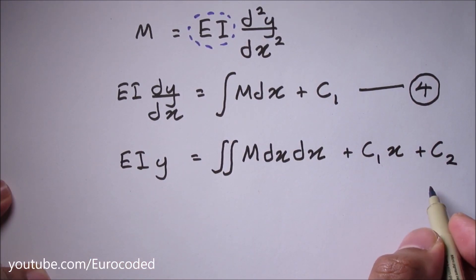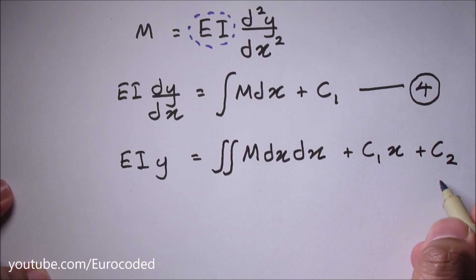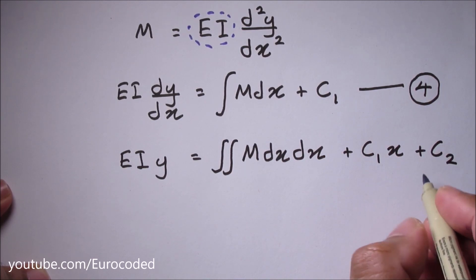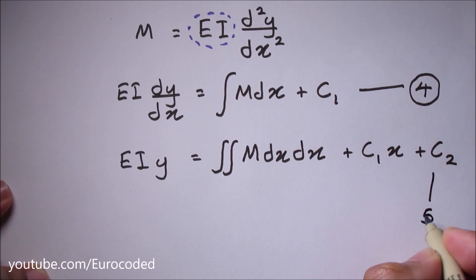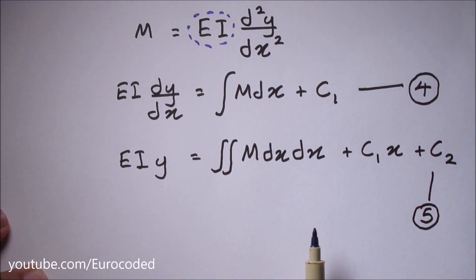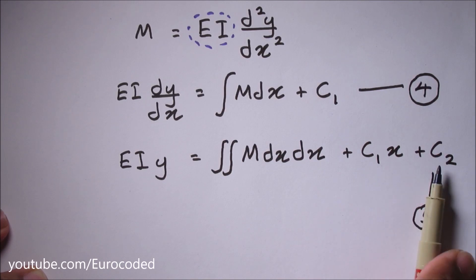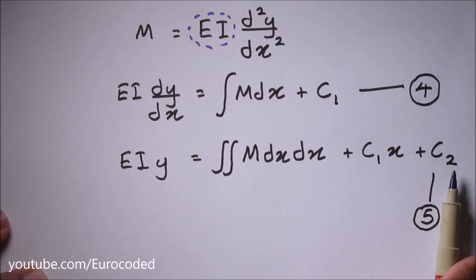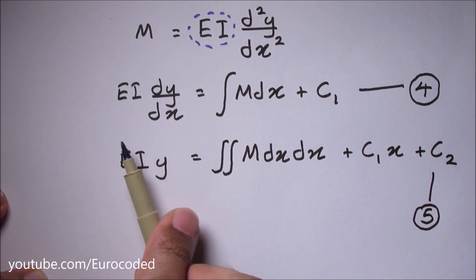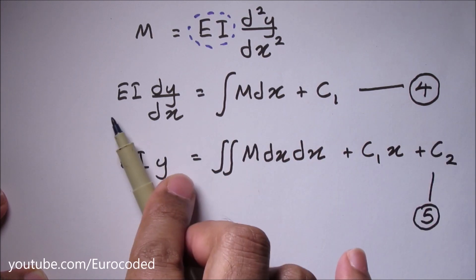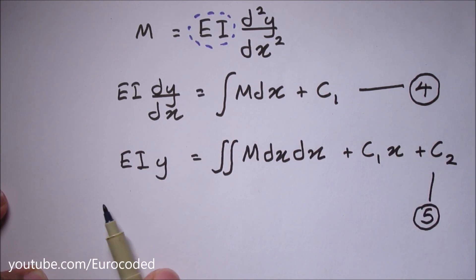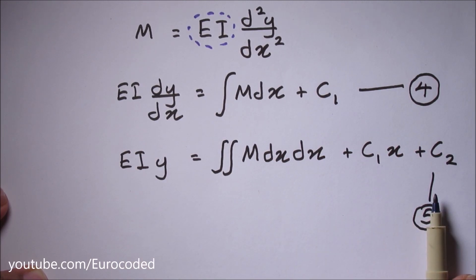This equation is known as the equation of the elastic curve and let's call this equation 5. Using the boundary conditions, we can determine both these constants C1 and C2, then using equation number 4 we can calculate the slope and using equation number 5 we can calculate the deflection.